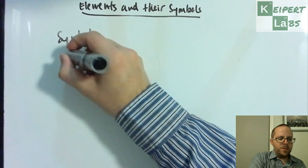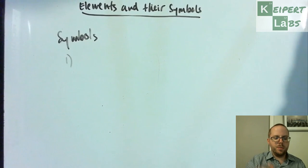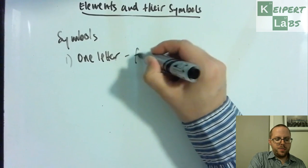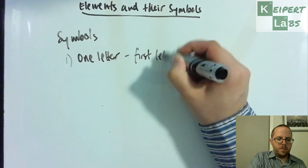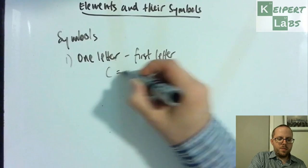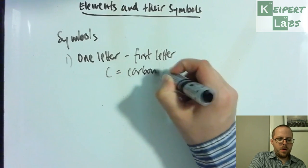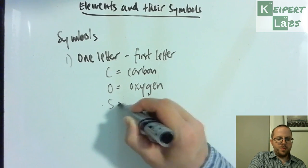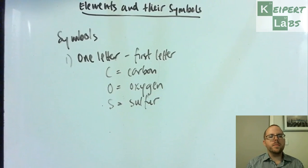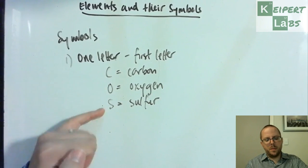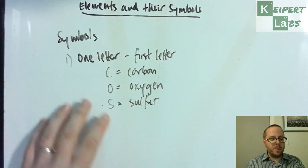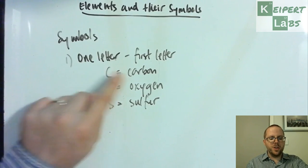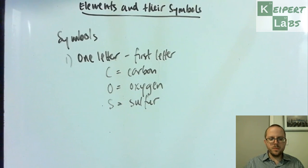The first category is where we've just got one letter, which is the first letter of the name. So C for carbon, O for oxygen, S for sulfur, and so on. These are capital letters - a single capital letter which you can identify as the first letter of each name.